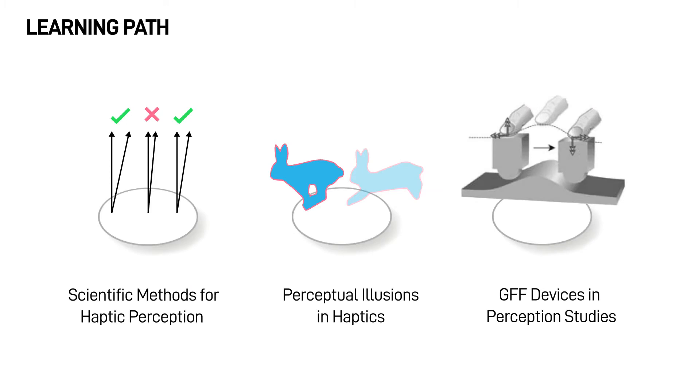In this chapter, you will learn about the scientific methods for studying haptic perception, perceptual illusions in haptics, and how GFF devices are used in perception studies.